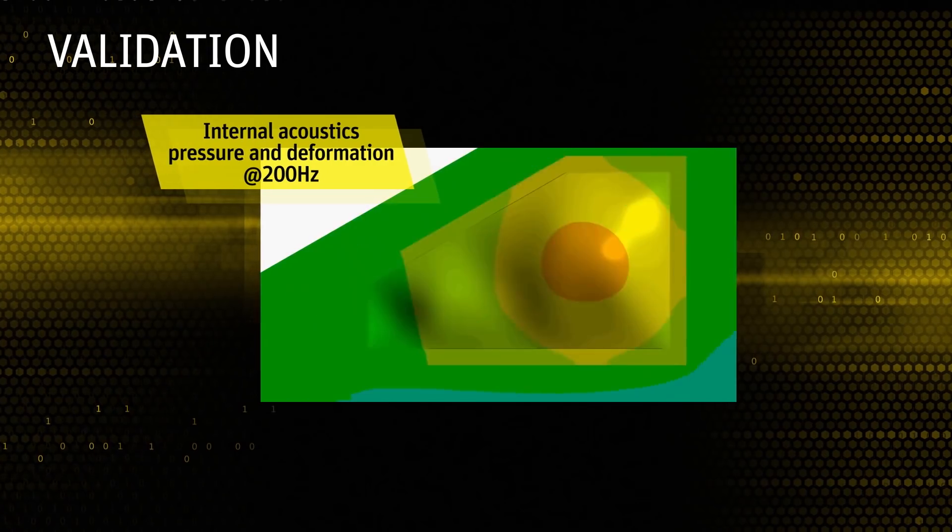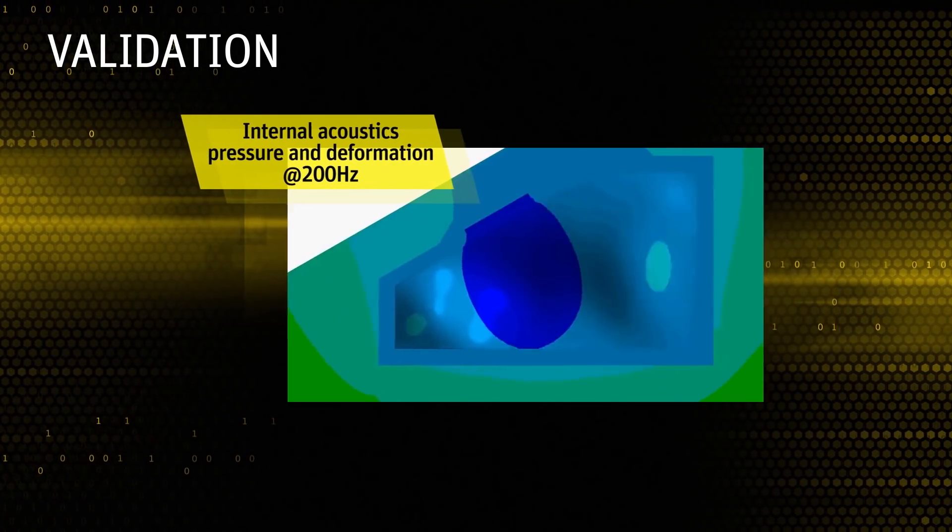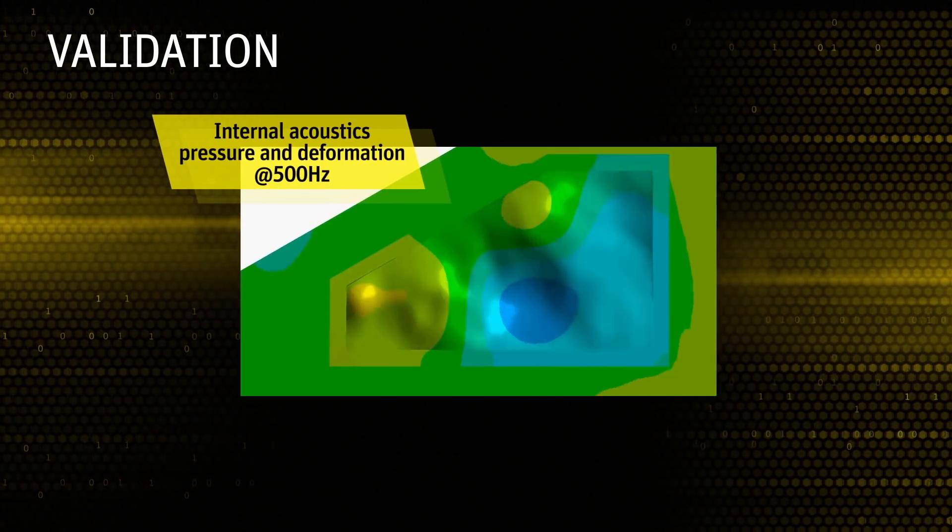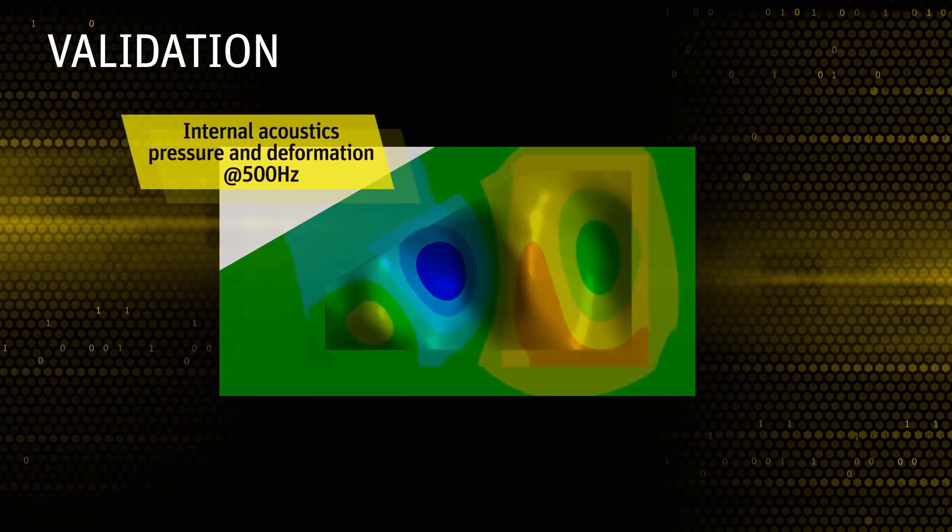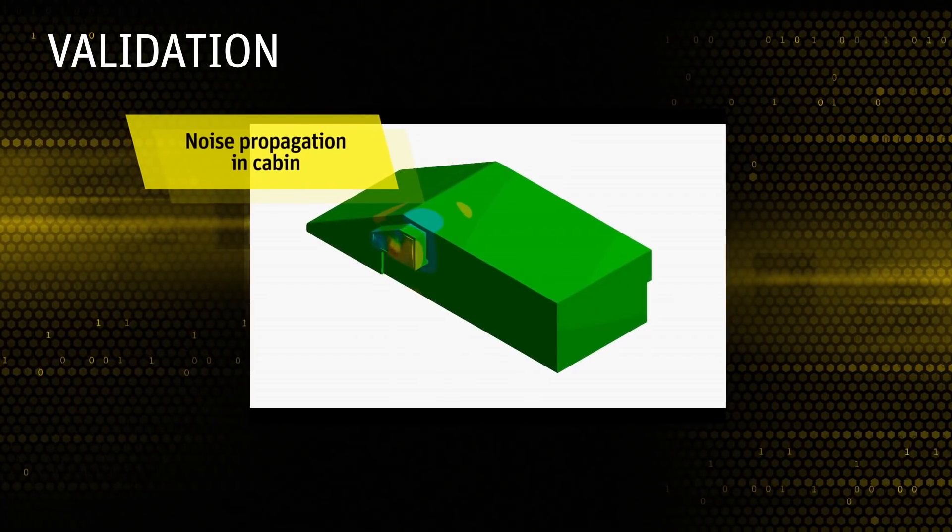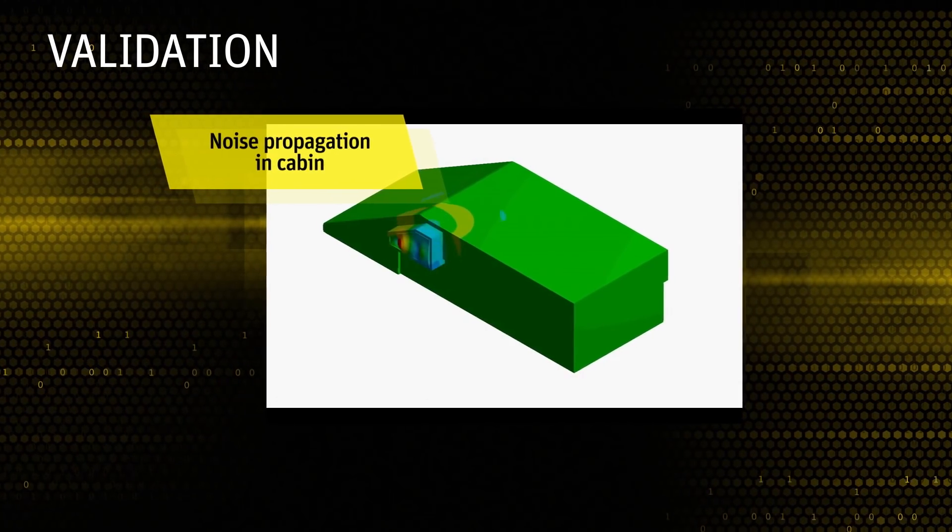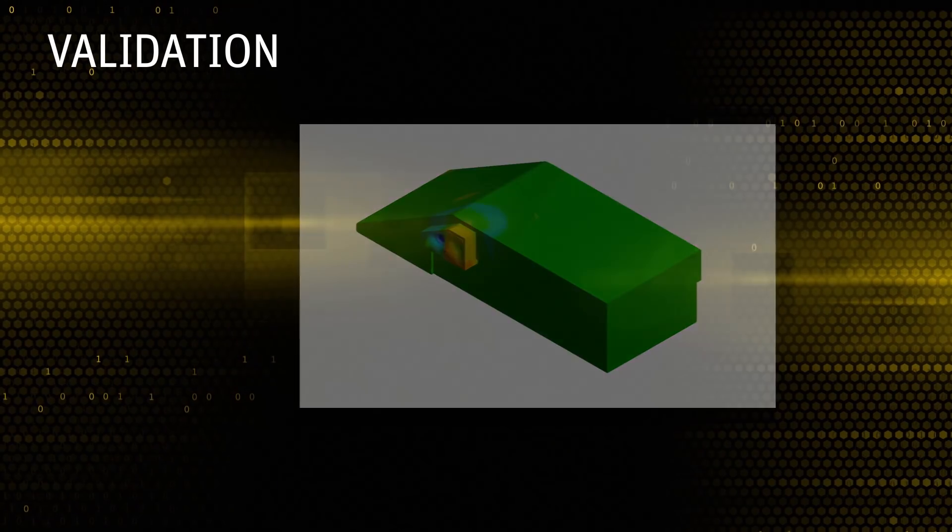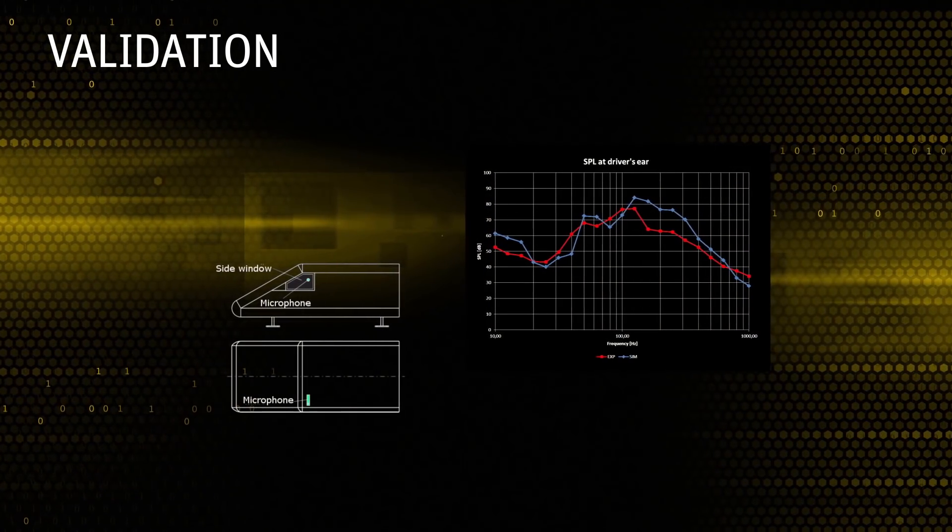The external excitation makes the side glass vibrate. The deformation shapes are colored by acoustic pressure. These vibrations excite air pressure fluctuations inside the vehicle cabin, which will propagate inside at the speed of sound. The validation of this new method shows excellent agreement with the experimentally measured data inside the cabin.